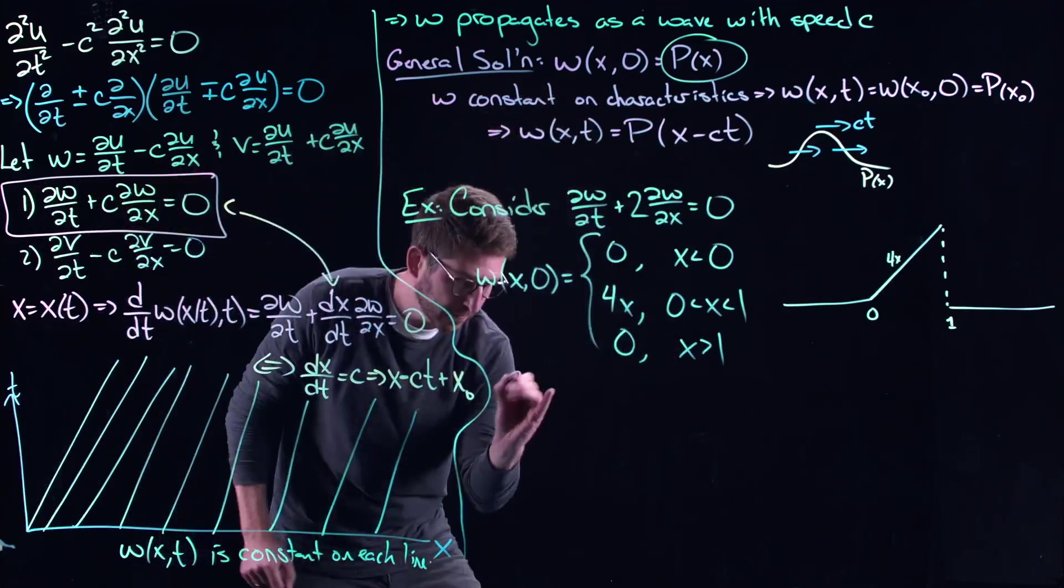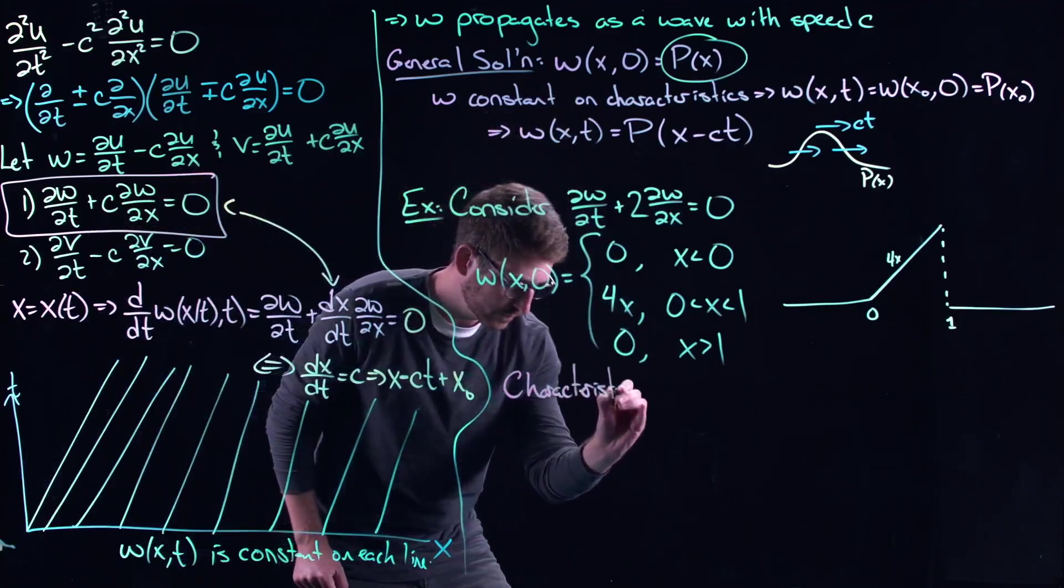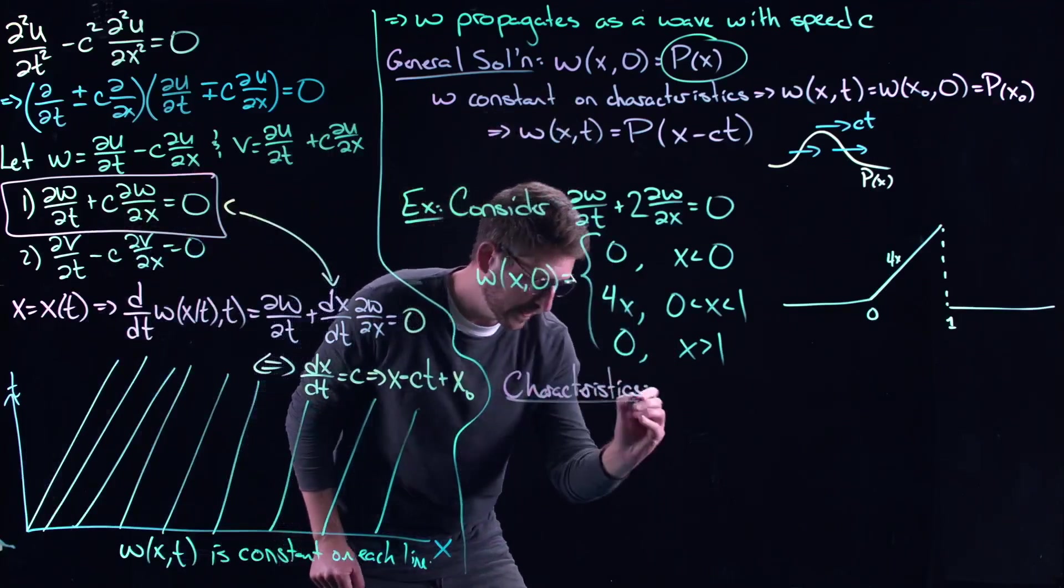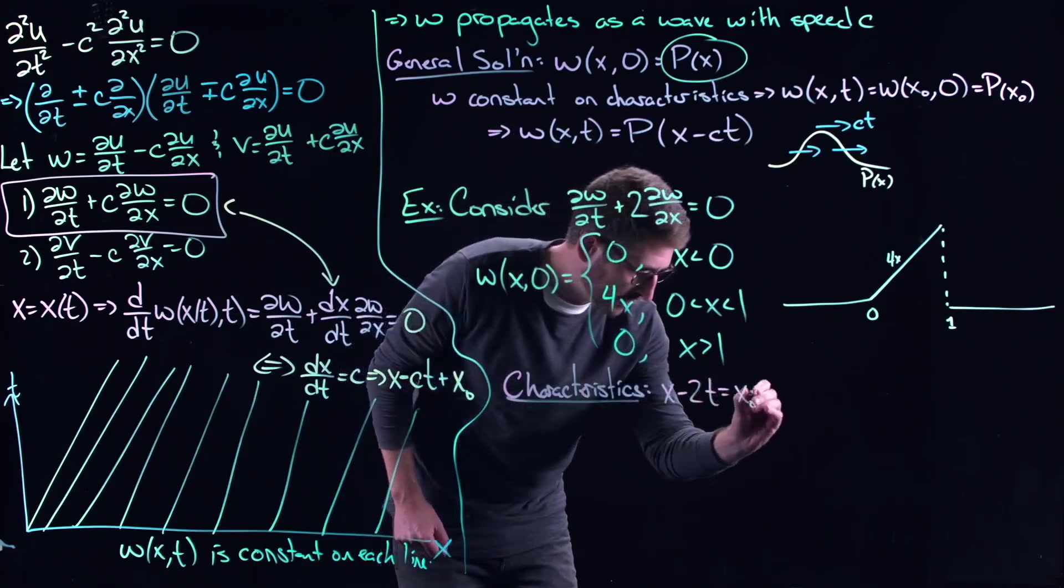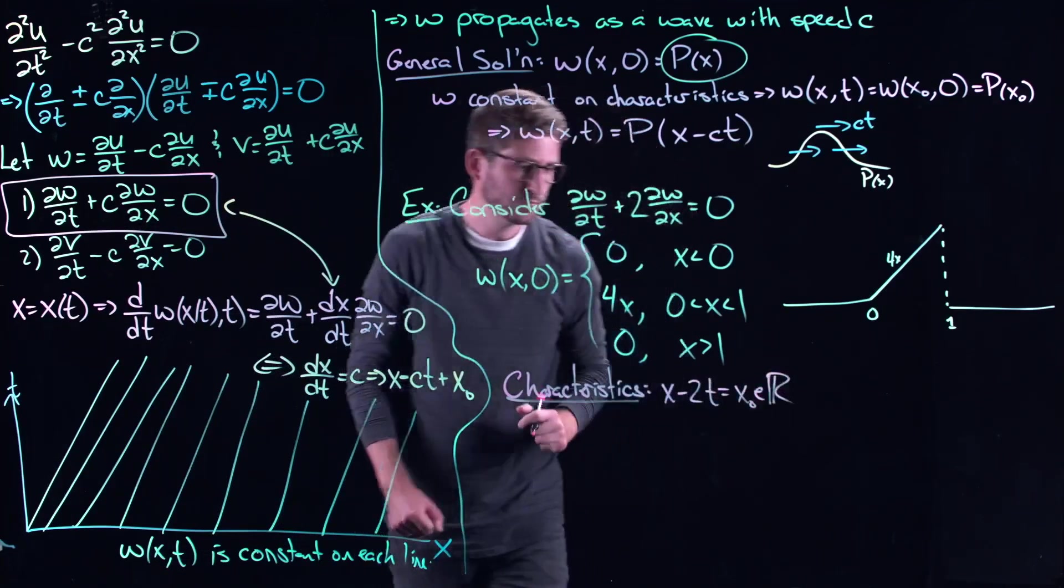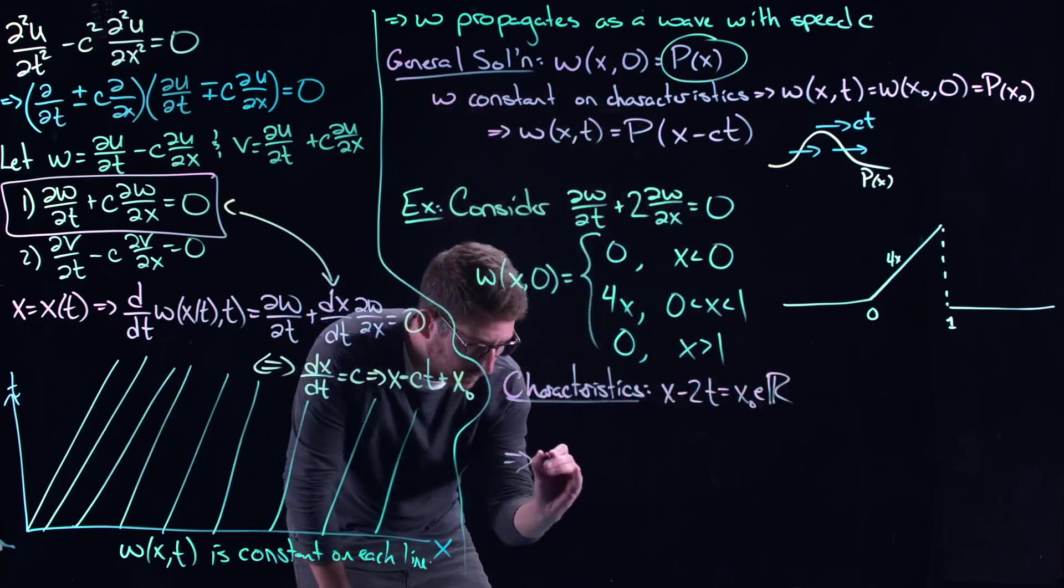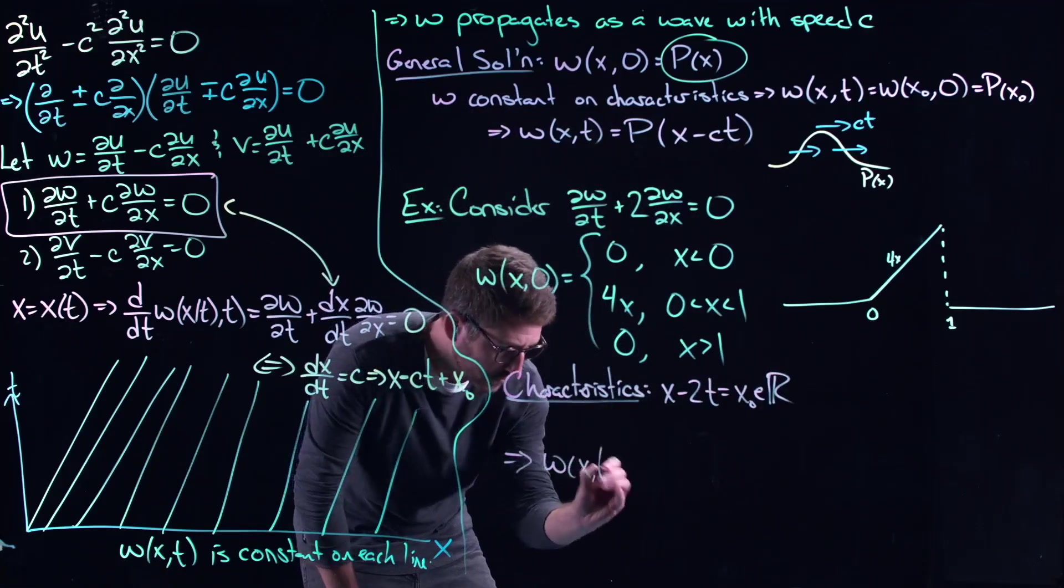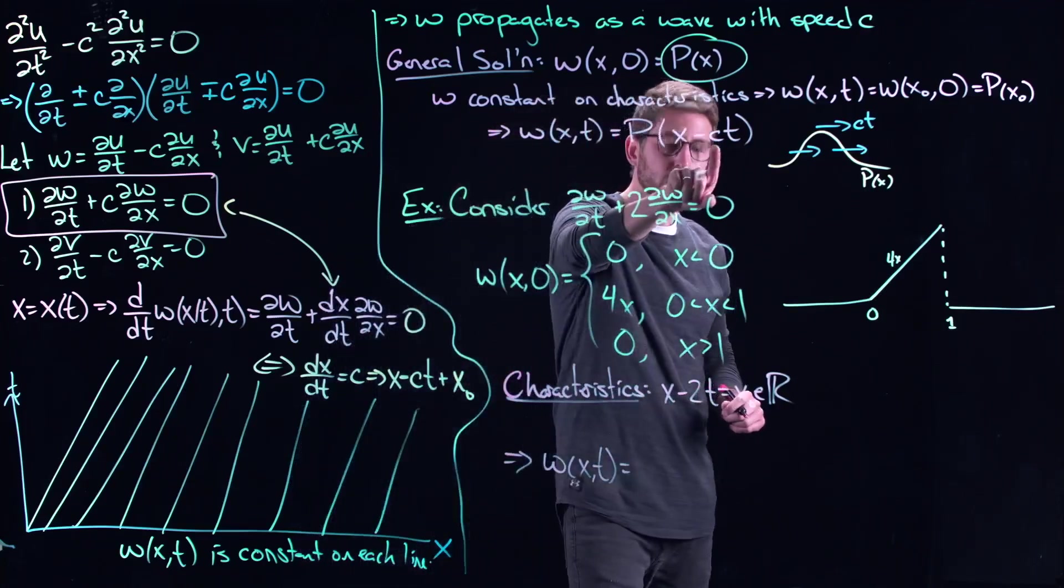So essentially what you get here, we get that the characteristics are given by x minus 2t equals x naught, which is just any real number. And so thus, your solution is just the original profile translated.